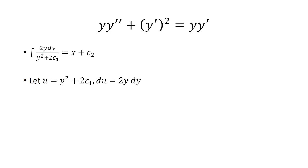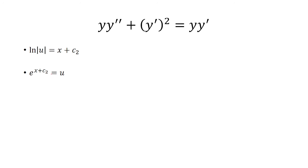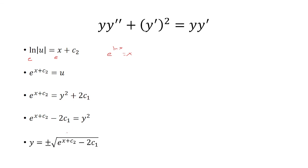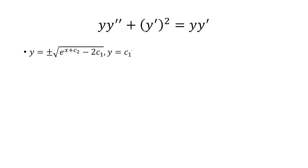To integrate the left side, we do a u-substitution, letting u equal the denominator, so du is just the numerator. Now it's just the integral of du over u, which is ln of u — that is, ln of y squared plus 2 times a constant. Raising e to both sides, and using e to the ln of x equals x, we replace u with y squared plus 2 times the constant. Subtracting the constant and taking the square root — considering both the positive and negative solutions — gives us the final y. We put it all together with the earlier solution y equals a constant.